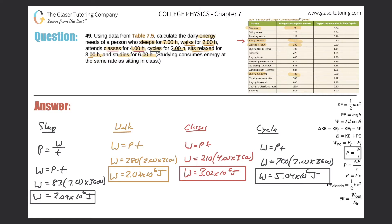Sitting relaxed for three hours: work equals power times time. The power for sitting at rest is 120 watts. So 120 watts multiplied by three hours times 3,600. The work for just sitting is 1.30 times 10 to the sixth joules.